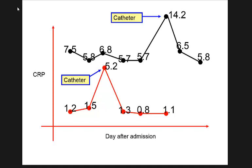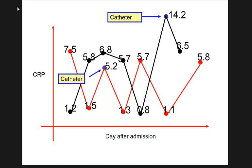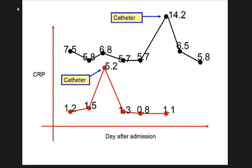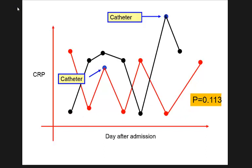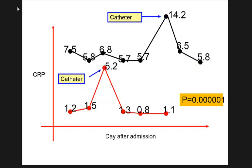Now if I recover the patient IDs — knowing which observations come from which patient — the data look very different. I didn't change the values, only the pairing. Without pairing, the p-value is 0.113. With pairing, the p-value is significant. How data are related dramatically changes the p-value.